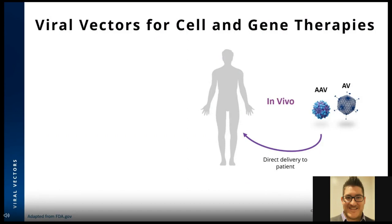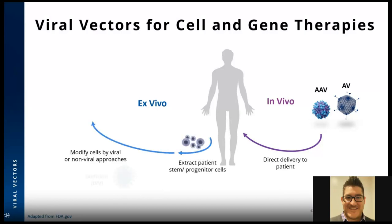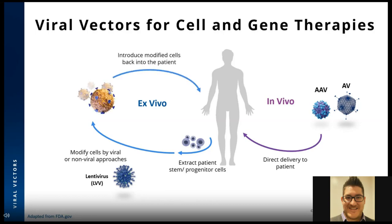The majority of current cell and gene therapies leverage three key viral vectors. For direct gene therapy via in vivo delivery, AAVs and adenovirus are being directly administered to the patient. The other major therapy, which happens ex vivo, or cell therapy, requires extracting cells from the patient and modifying them by either viral or non-viral approaches. Lentivirus is the main viral vector used for ex vivo cell therapy. All three viruses need to be produced in high amounts with consistency and quality, requiring a battery of tests referred to as viral vector analytics.